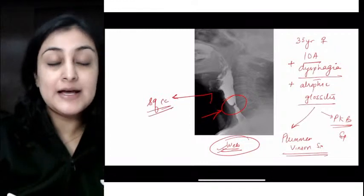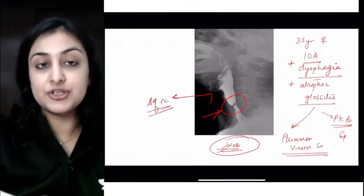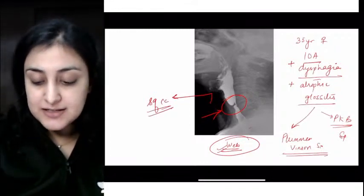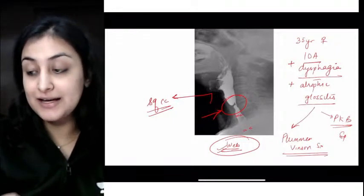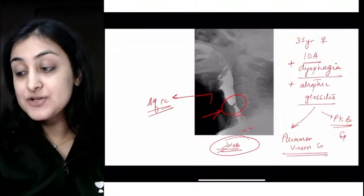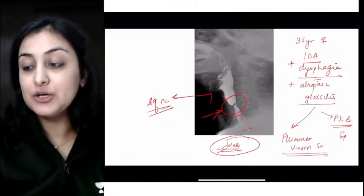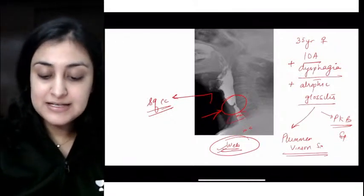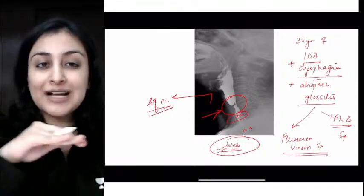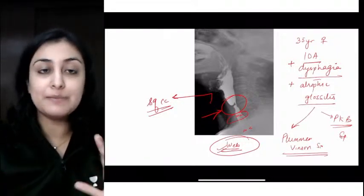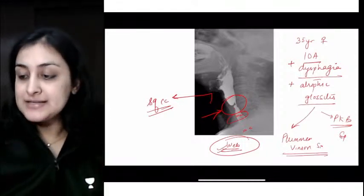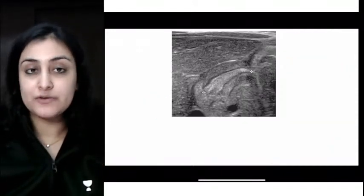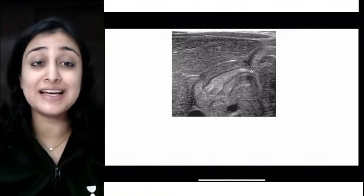On the other hand, when I see a circumferential defect like this, something on both sides, that is a ring - called an esophageal ring or Schatzki ring. Whereas this here is an esophageal web which comes only anteriorly. Remember, web never comes posteriorly, it's always anterior.